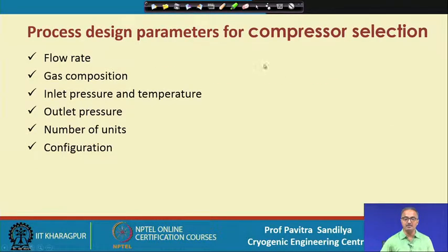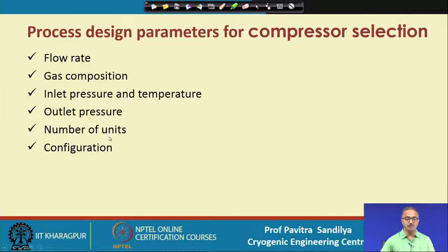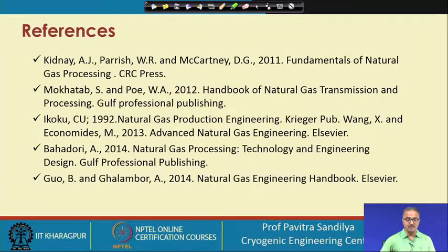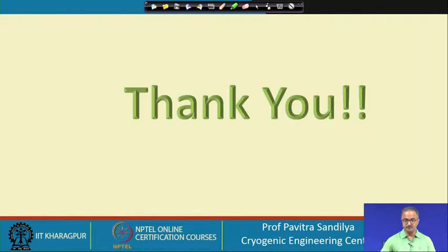Finally, the key design parameters for compressor selection are: the flow rate, the gas composition — which determines the gas properties — the inlet pressure and temperature, the outlet pressure, the number of units, and the configuration. These references provide the details about compression in natural gas systems.